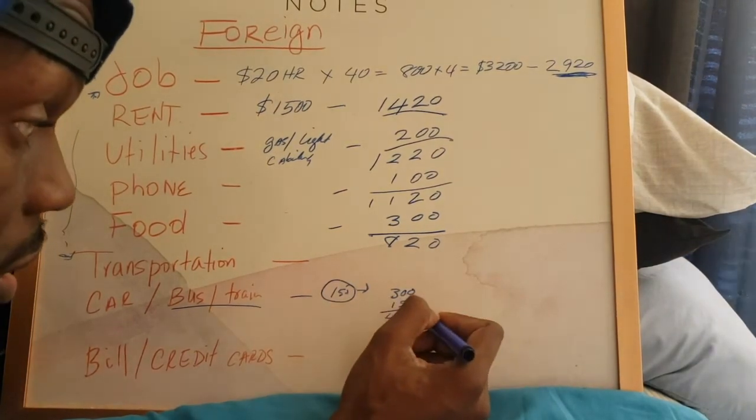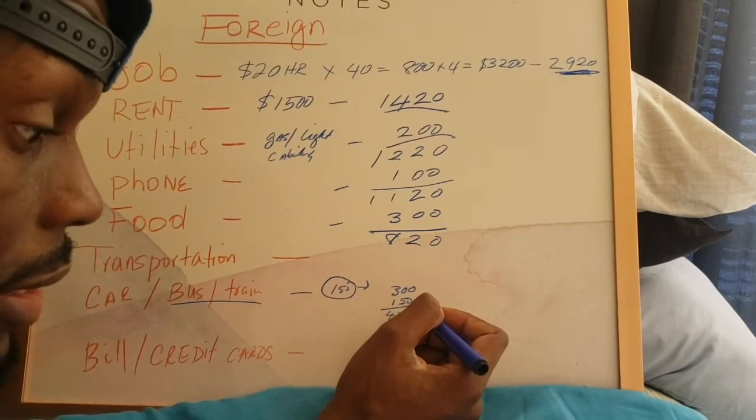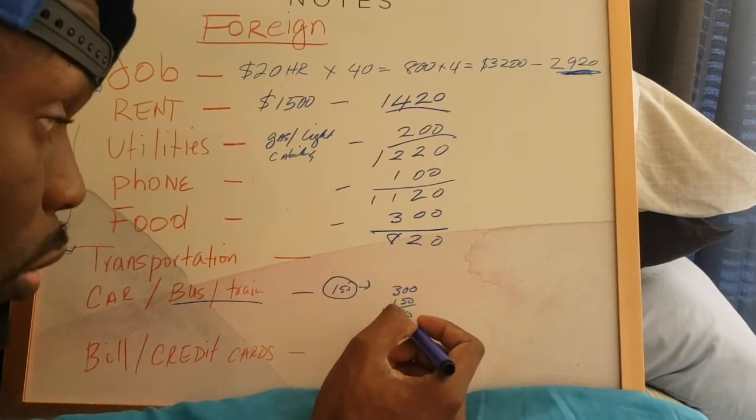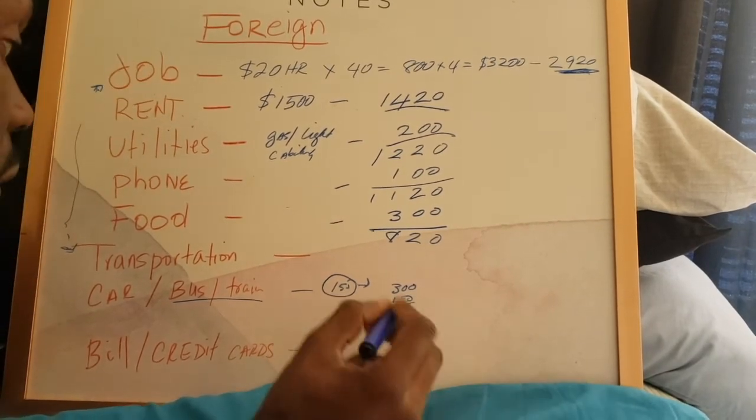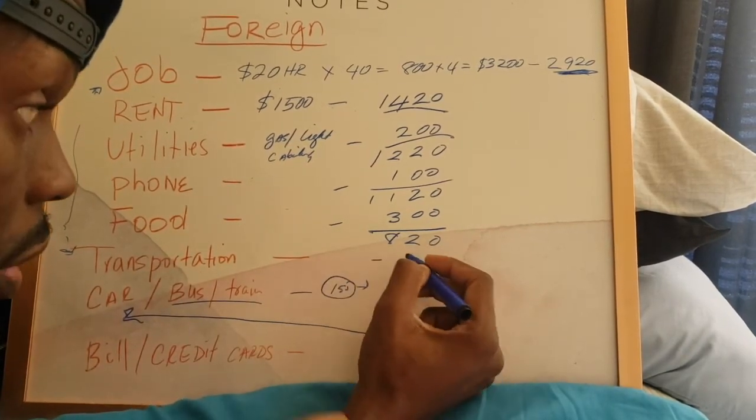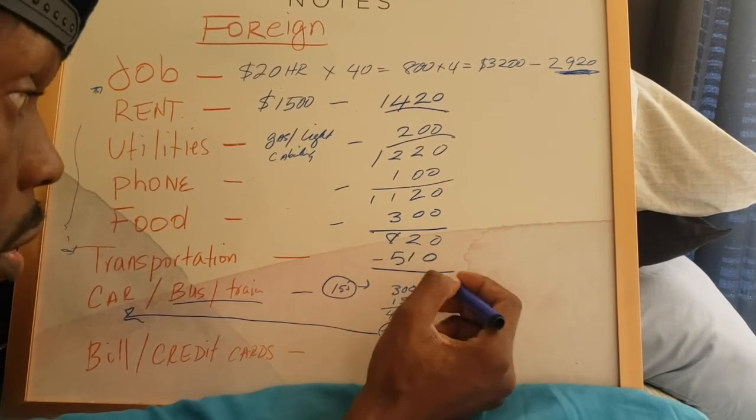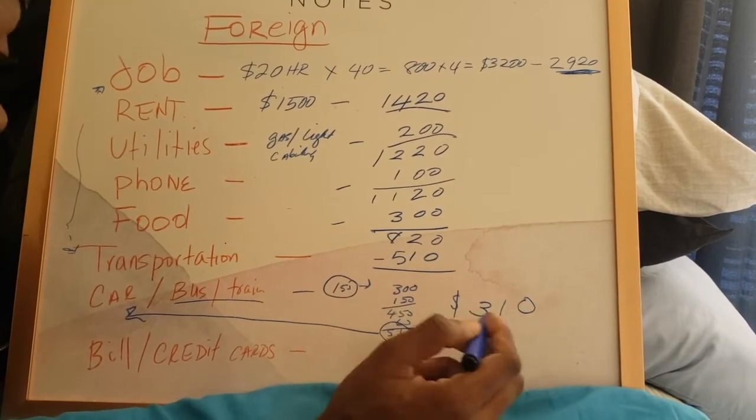Then you have gas. The gas every two weeks, let's just say $60 a month would do it for gas. So you have $60, that's $510 for this transportation if you have a car. So you're down to $310 left.